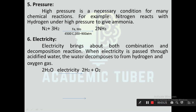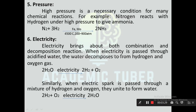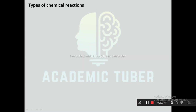Next one is electricity. Electricity brings about both combination and decomposition reactions. When electricity is passed through acidified water, the water decomposes to form hydrogen and oxygen gas: 2H₂O (electricity) → 2H₂ + O₂. Similarly, when electric current is passed through a mixture of hydrogen and oxygen, they unite to form water: 2H₂ + O₂ (electricity) → 2H₂O.